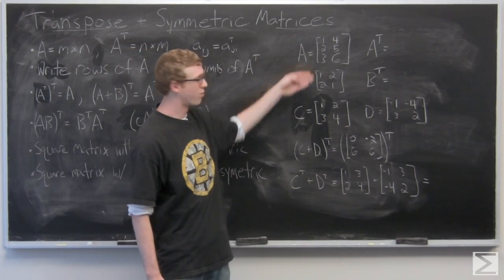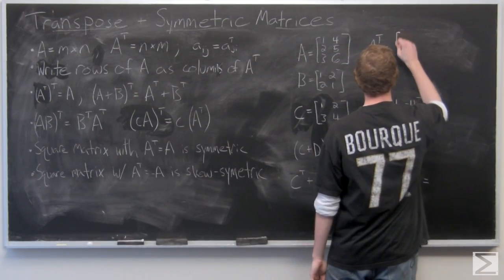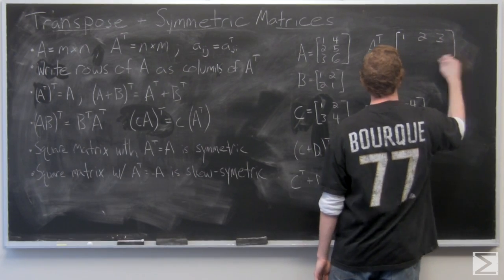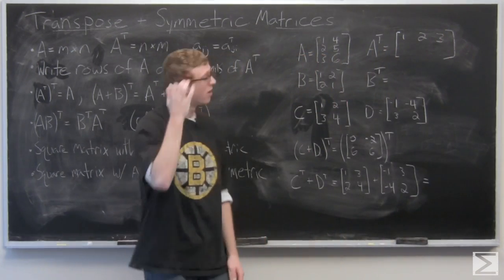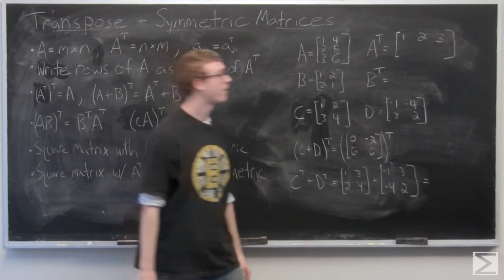So 1, 2, 3 is going to become a row across, 1, 2, 3. And 4, 5, 6 is going to become a row across as well.